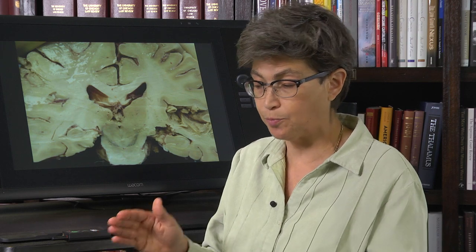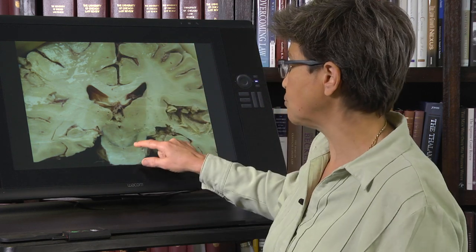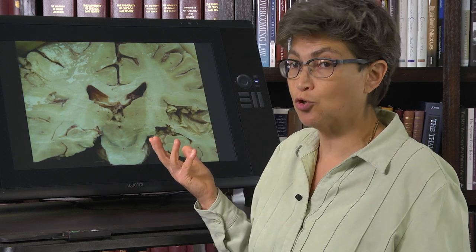This is the substantia nigra pars compacta as opposed to the substantia nigra pars reticulata. The pars reticulata neurons are output cells from the basal ganglia and do not contain dopamine. Substantia nigra pars compacta cells contain dopamine and project into the striatum. They also contain this black stuff, which is neuromelanin.